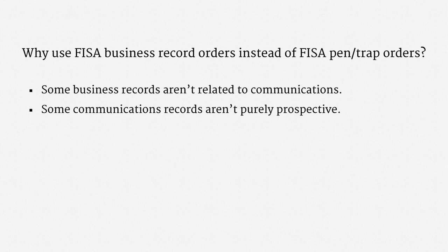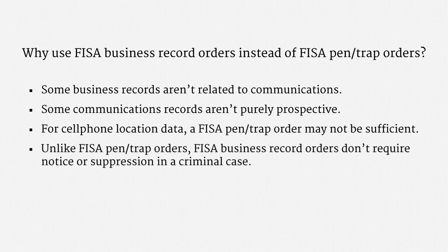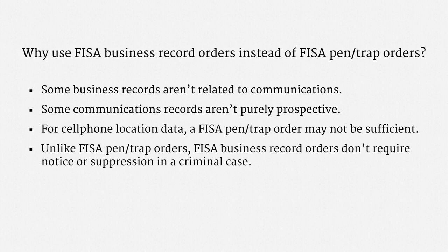Internet metadata, by contrast, is purely prospective — most internet service providers just weren't retaining the types of data that the NSA was interested in. Yet another reason is that, as we've already seen, CALEA requires more than a pen trap order to track cell phones, and that caveat might also apply to FISA pen trap orders. There's a final, more cynical reason why the NSA has preferred business record orders to pen trap orders: if prosecutors want to introduce FISA pen trap evidence against a surveillance target, they have to provide notice and the target can move to suppress. FISA business record orders don't come with those statutory protections, so by using business record orders for bulk surveillance programs, there's statutorily less transparency and less opportunity to challenge the programs.